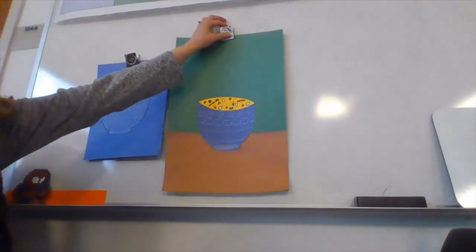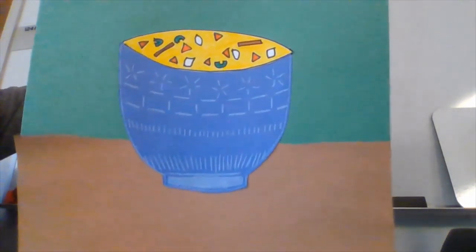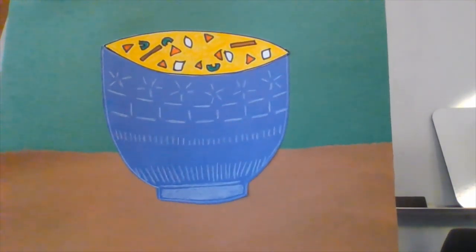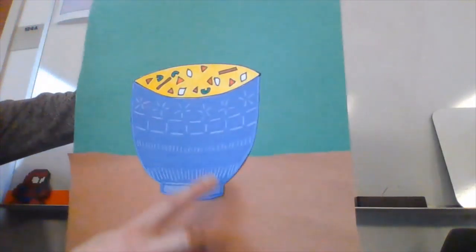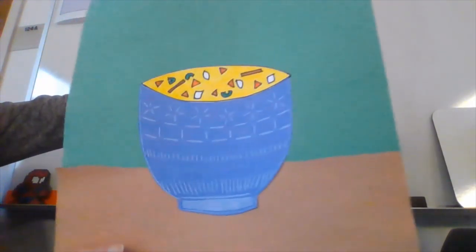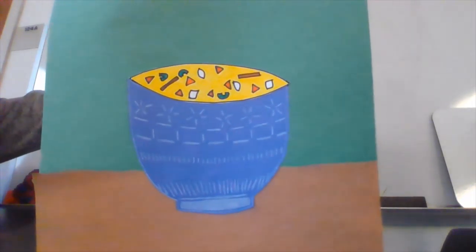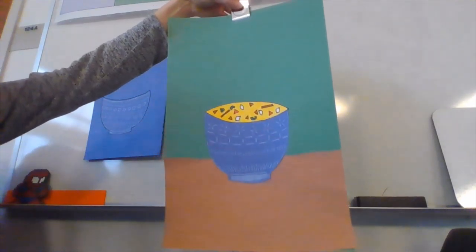So what you're going to do to get started today, and I'm just showing my example a little bit closer, I used construction paper for my bowl, and I also used some paper to make the soup part or the food that's in my bowl. I used construction paper for the background as well.